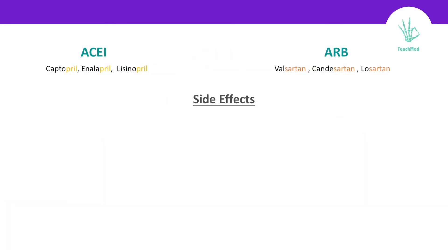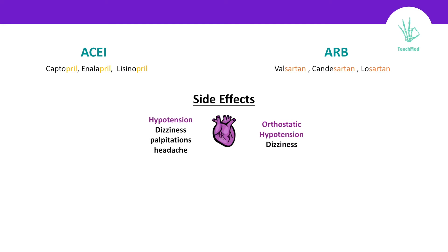Now for the side effects. ACE inhibitors can cause hypotension, dizziness, palpitations, and headache. ARBs can cause orthostatic hypotension or dizziness. ACE inhibitors will not cause the release of aldosterone, that's why the patient can present with hyperkalemia.